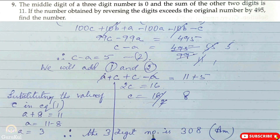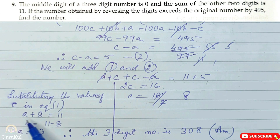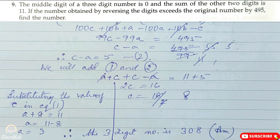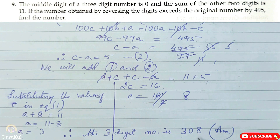Hence C = 16 divided by 2 = 8. Substituting C = 8 into equation 1: A plus 8 = 11, so A = 11 minus 8 = 3. The middle digit is given as 0, so B = 0. Therefore the three-digit number is 308. This is the answer.